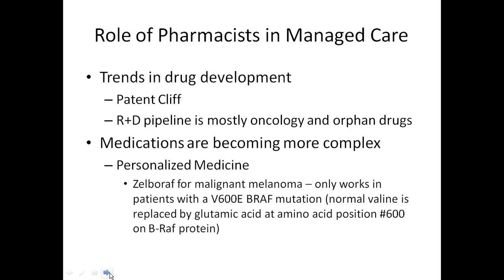Healthcare is always a limited resource, and somebody needs to manage utilization to ensure resources are used in the best way possible. Medications are also becoming much more complex. We are entering the area of personalized medicine, where many oncology drugs come with genetic tests. Zelboraf for malignant melanoma is a perfect example — it only works in patients who have the V600E BRAF mutation. If the patient does not have that mutation, the drug will not work.